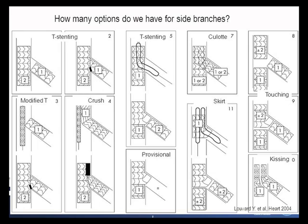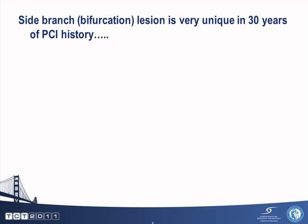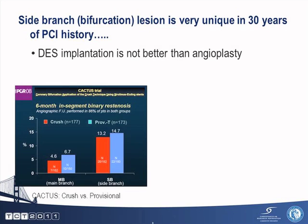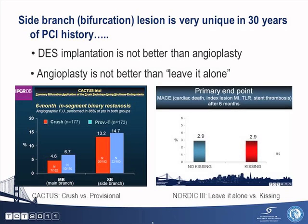How many options do you have for side branches today? As you can see, there are a lot of options. You can pick anyone, whatever you like, and do that. But before you do that, I think it should be understood that we are dealing with a very unique lesion, because the side branch or bifurcation lesion is one of the only lesions in 30 years of PCI history in which drug-eluting stent implantation is not better than angioplasty, and even angioplasty is not better than a leave-it-alone strategy.